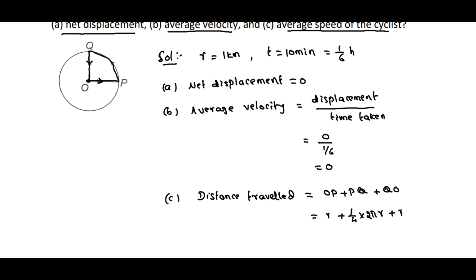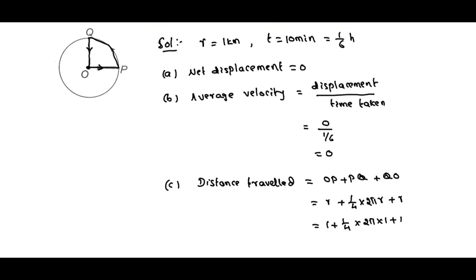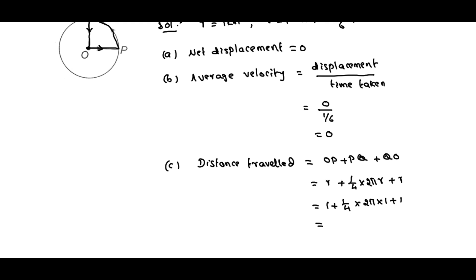So the radius given is 1 kilometer: 1 plus 1 plus 1/4 × 2π × 1 plus 1. So that is equal to, if you simplify, we will get 25/7 kilometers.